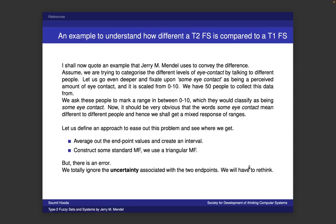Jerry Mendel discussed the idea of eye contact. If you can quantify eye contact and give it a range, say 0 to 10, and you ask people what they believe 'some eye contact' would be — for me, some eye contact might be units 3 to 5. If I have 3 units of eye contact with someone, I can say we had some eye contact. But maybe for you, some eye contact might lie in the range 5 to 6, where 'some eye contact' is a linguistic variable.